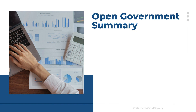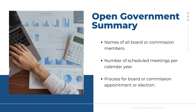Post a summary table or listing of the following information items to aid in researching the governing structure of your entity: the names of each member of the governing body, board, or commission, including the presiding officer. Examples of governing bodies include a school board, city council, commissioners court, executive board, board of regents, board of directors, etc. The number of scheduled meetings per calendar year with the frequency of meetings such as quarterly, weekly, or monthly. The process for board or commission appointment or elections, including the application and process of submission.